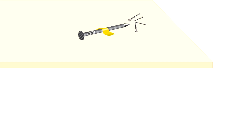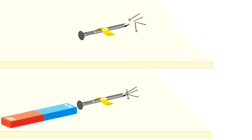Now pay attention to this demonstration of a property of ferromagnetism. We have tiny nails near a big nail, and when a magnet bar is brought close to the big nail, the tiny ones are attracted to it as if to a magnet. You cannot get the same result with a pencil, for example. So we see that iron here acts like a magnet.